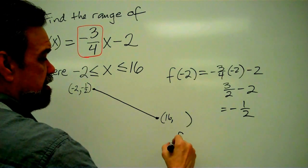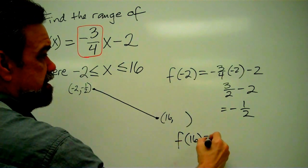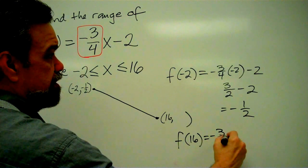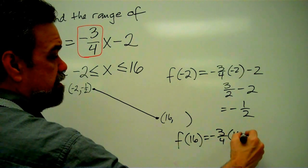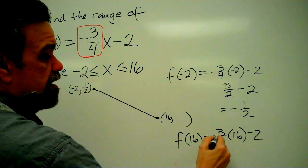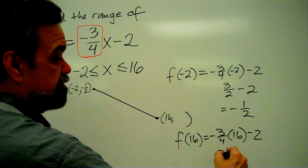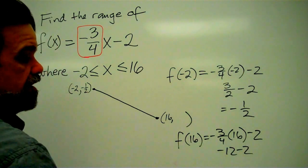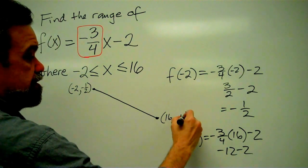And to find this endpoint, we say, what is f of 16? It's negative 3 fourths times 16 minus 2. Negative 3 fourths of 16 is negative 12, and that's going to be negative 14.